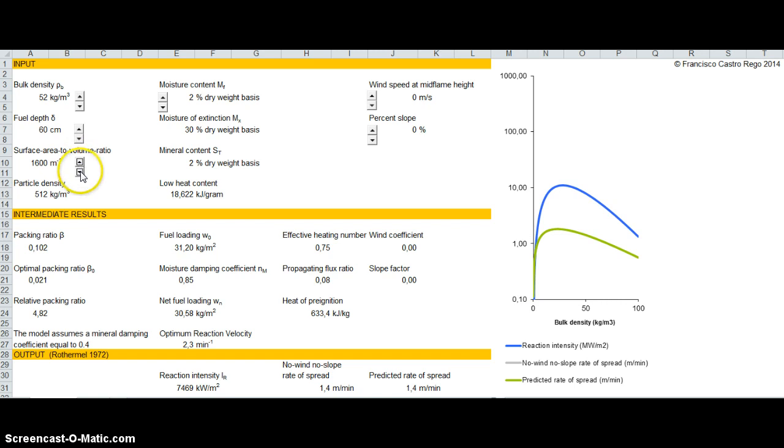So what you see here, for instance, is that when you decrease the value of the surface area to volume ratio, you are having typically larger fuels. And with larger fuels, the effect of bulk density is not so pronounced. So there are lots of possibilities to explore the different combinations of these variables.